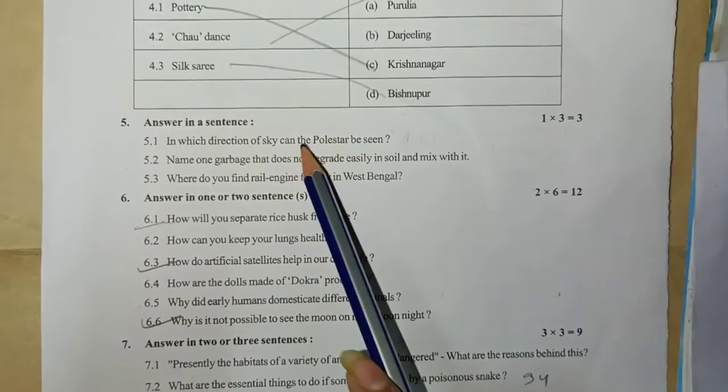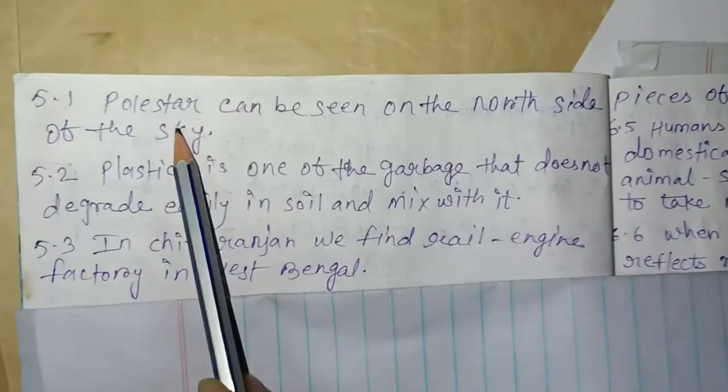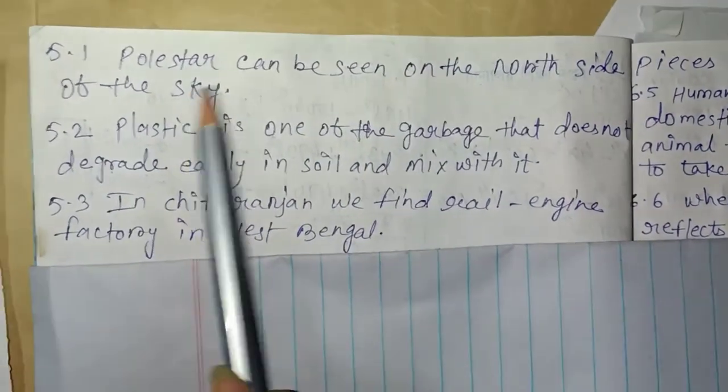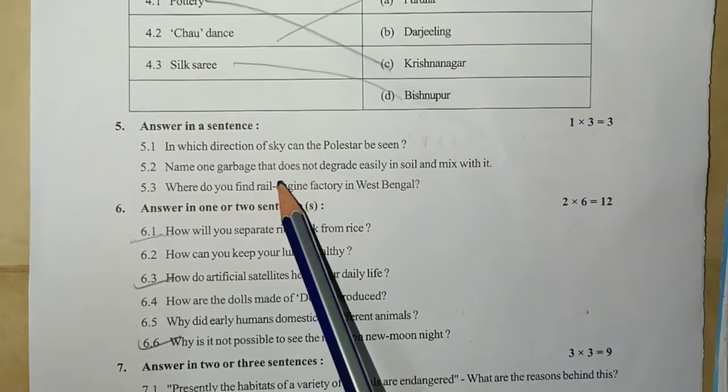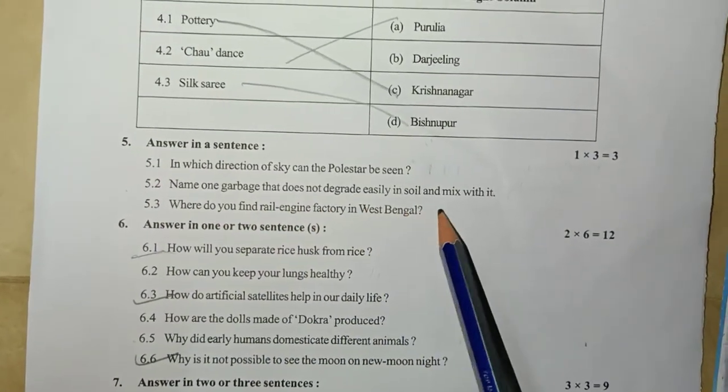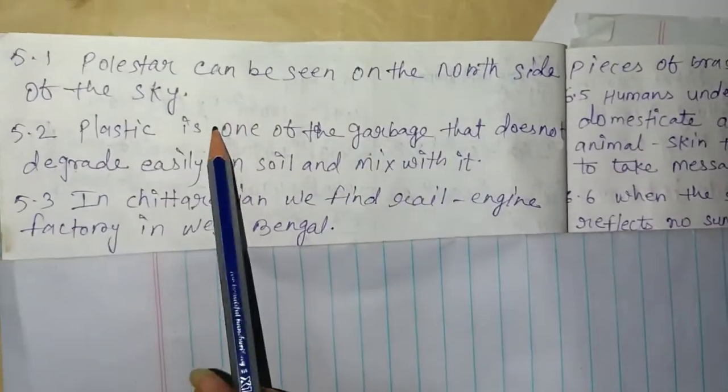Pole star can be seen on the north side of the sky. 5.2: Name one garbage that does not degrade easily in soil and mix with it. Plastic is one of the garbage that does not degrade easily in soil and mix with it.